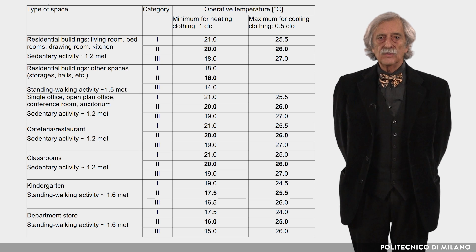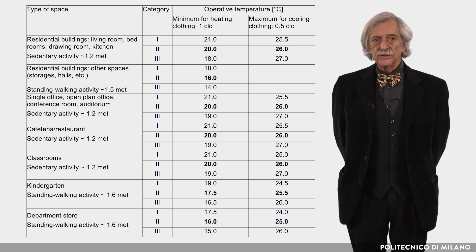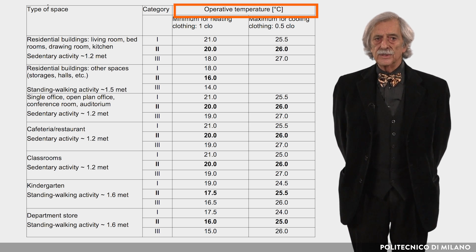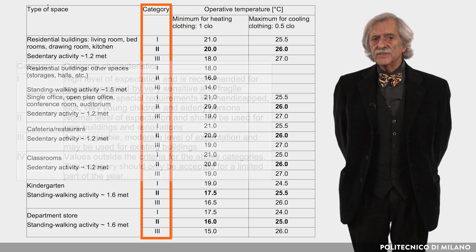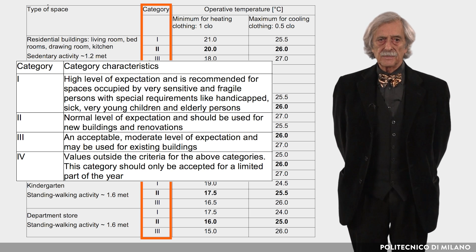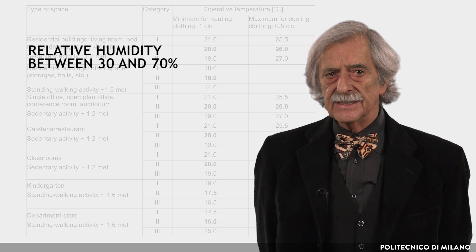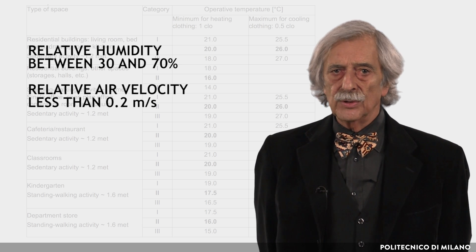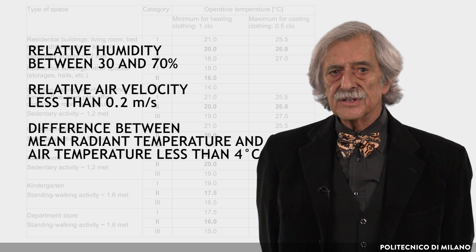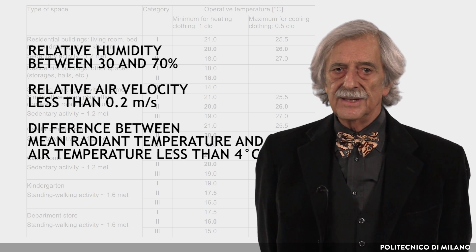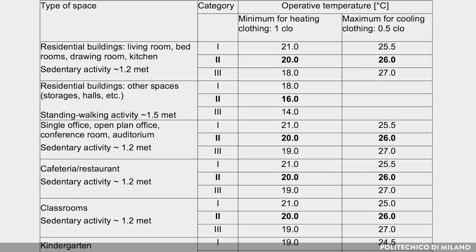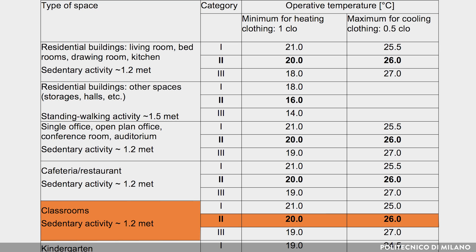To take into account this effect, the European standard EN 15251 on comfort temperatures to be maintained in heated and air-conditioned spaces refers to the operative temperature, not to the air temperature, as shown in the table, where different categories of environmental quality are also considered. The values can be applied if relative humidity is between 30 and 70%, relative air velocity is less than 0.2 m/s, and the difference between mean radiant temperature and air temperature is less than 4°C. For example, in classrooms of category 2 where sedentary activity takes place, the recommended design value of indoor operative temperature for cooling is 26°C.